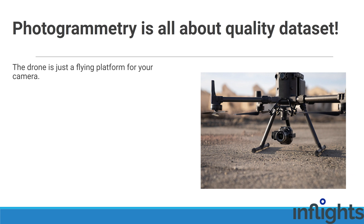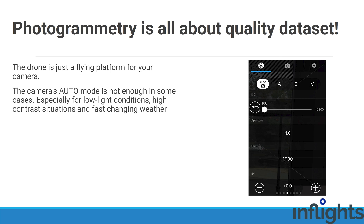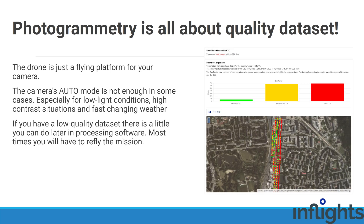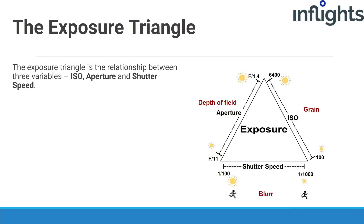In photogrammetry we take hundreds or even tens of thousands of images. The drone is mostly just a flying platform for your camera. It is important to get to know your camera settings because auto mode is not enough in some cases — especially for low light conditions, high contrast situations, and fast changing weather. Also, if you have a low quality dataset, there is little you can do later in processing software. Most times you will have to refly the mission. For drone mapping, you need to understand a few basic photogrammetry concepts.